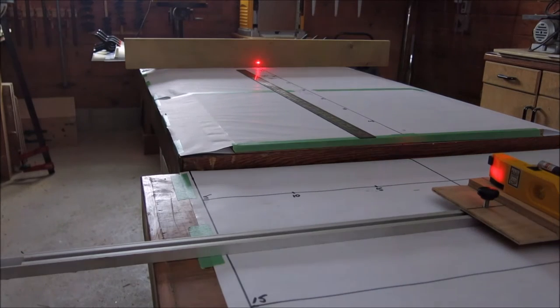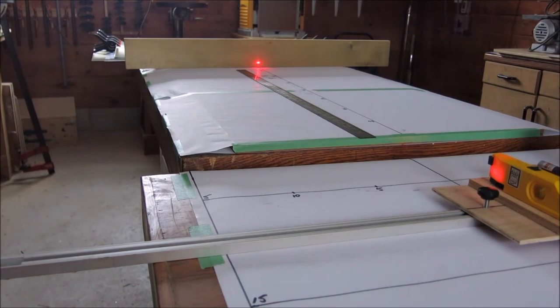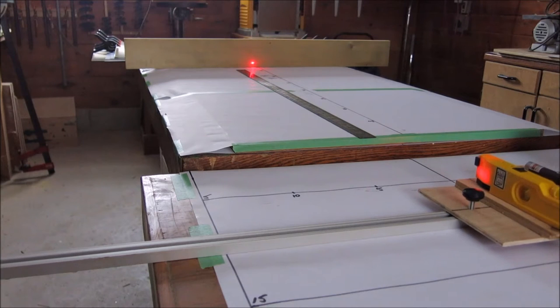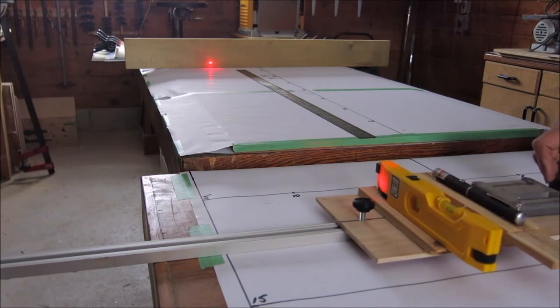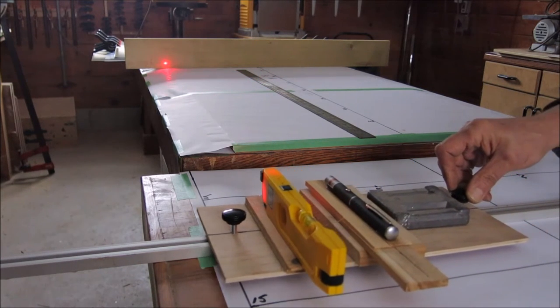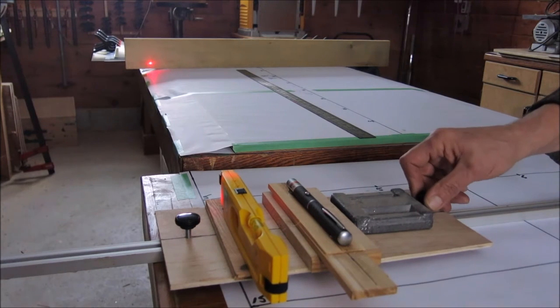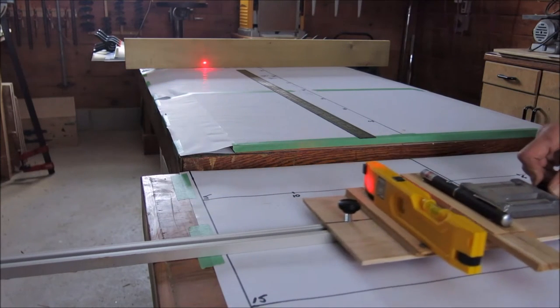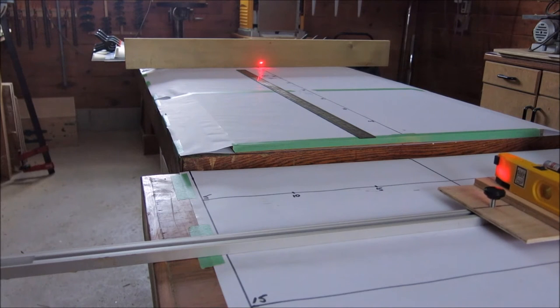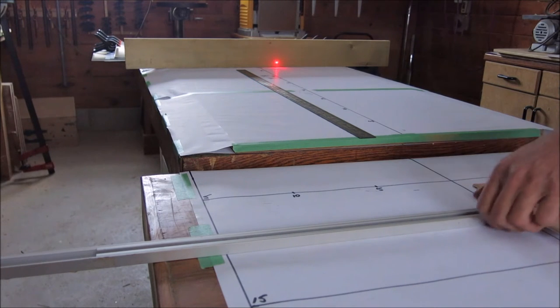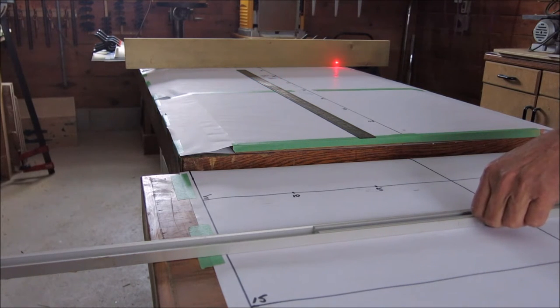So now I'm going to show you what happens as I slide that laser across without any lens there. I'm at the 10 inches back line and I'm just going to slide this along. Not very surprising, the dot moves parallel with the surface of the table about an inch above it.